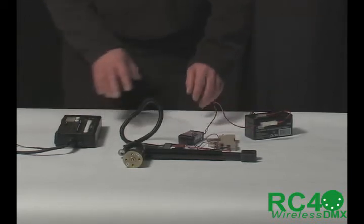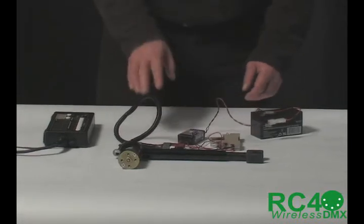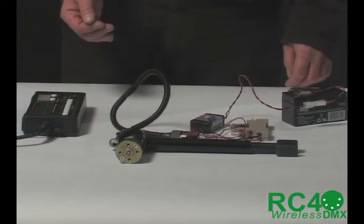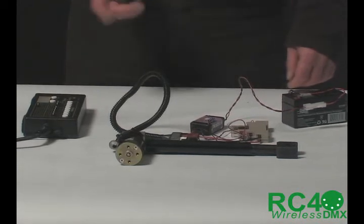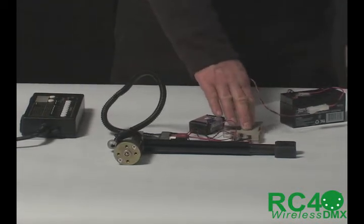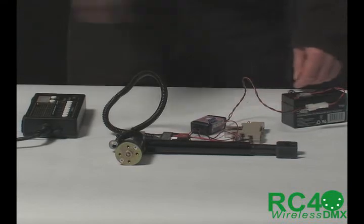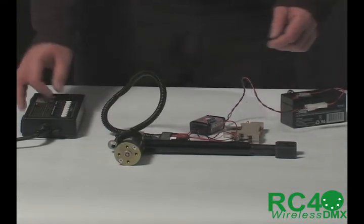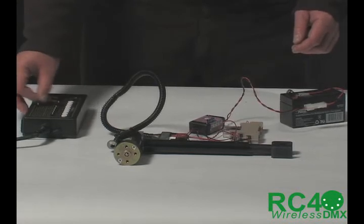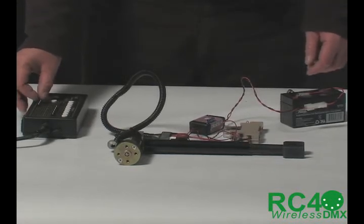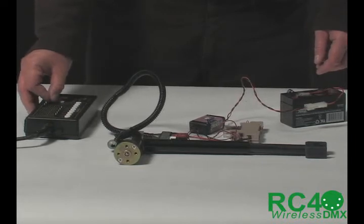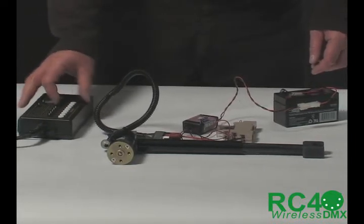But here is an example of using a two channel dimmer. One channel is linear dimmable, that's giving me variable motor speed. The other channel is non dim and it's flipping a relay to reverse the motor polarity and allow me to pull the linear actuator in and out so I can go in either direction. So here is moving the linear actuator outward. And note that as I change my DMX level, I can change its speed and flip the relay with the other channel and pull it back in.